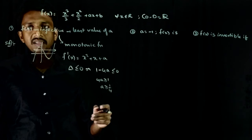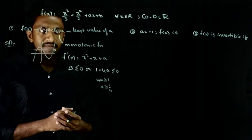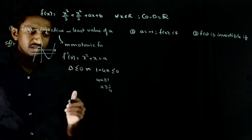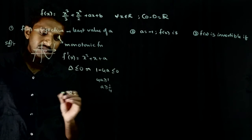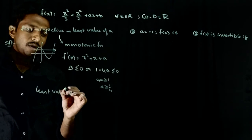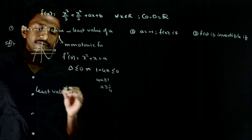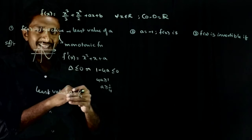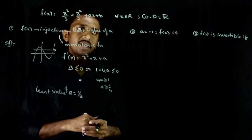So, a should be at least greater than one by four. So, what is the least value of a for which this function is injective? The least value of a is one by four. So, it should be greater than or equal to one by four always. So, now let us go to the next question.